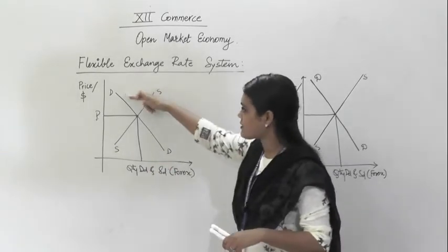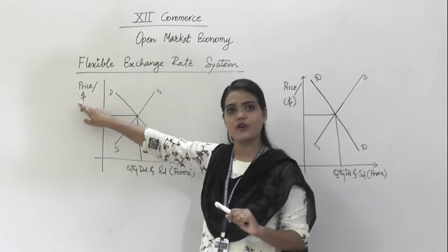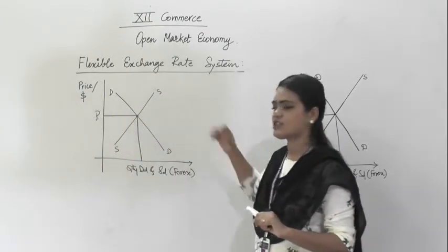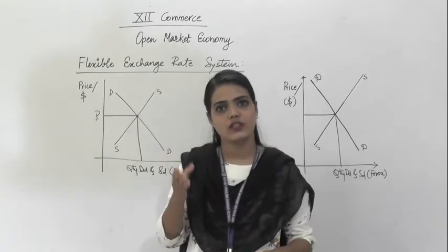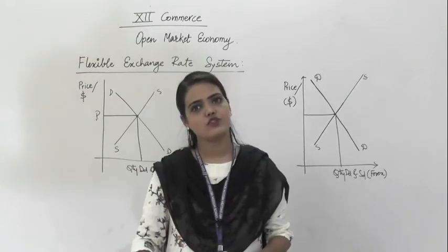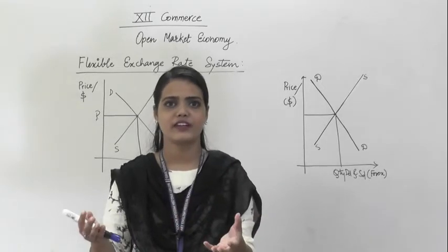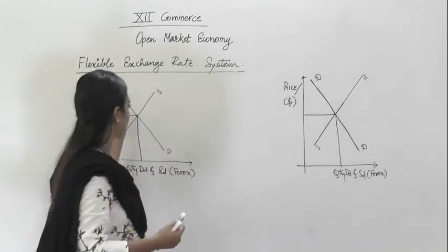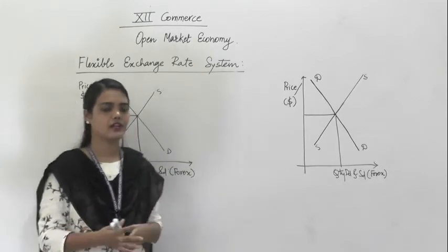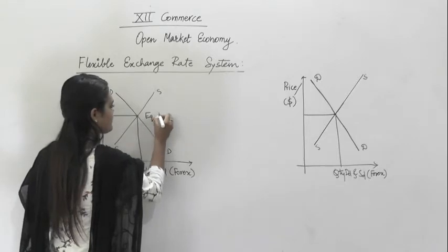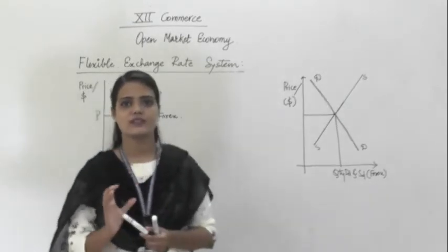Demand and price have a negative relationship, so the demand curve slopes downward. Supply of foreign exchange and the price of foreign exchange — rupees per dollar — have a positive relationship, so the supply curve slopes upward. Whatever price at which demand and supply for foreign exchange are equal becomes your exchange rate for today — this is called the equilibrium forex rate.